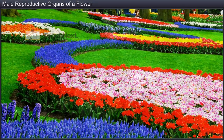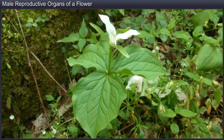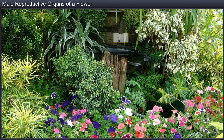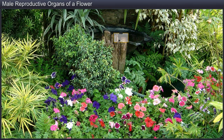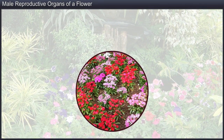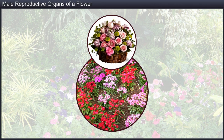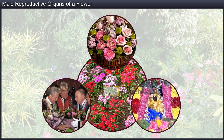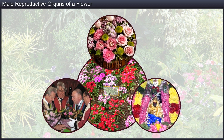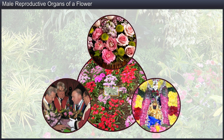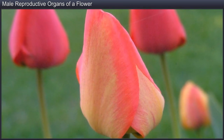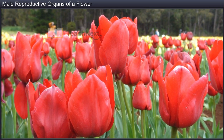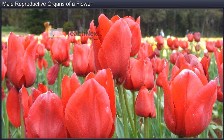Whether in gardens or wild corners of the earth, flowers lend an indescribable charm to the surroundings in which they grow. Widely used as objects of ornamental, social, religious and cultural value, flowers also are sites of sexual reproduction. Flowering is a major phase in the life cycle of a plant and takes place when the climate is congenial for pollination and the formation of seeds.